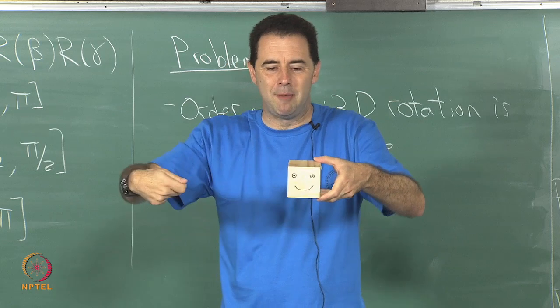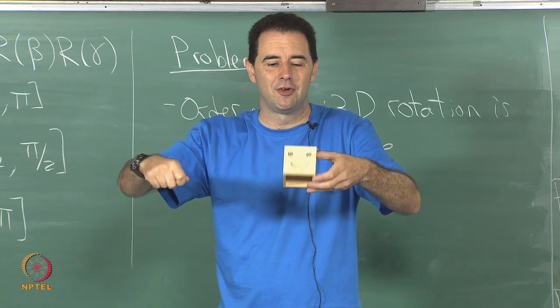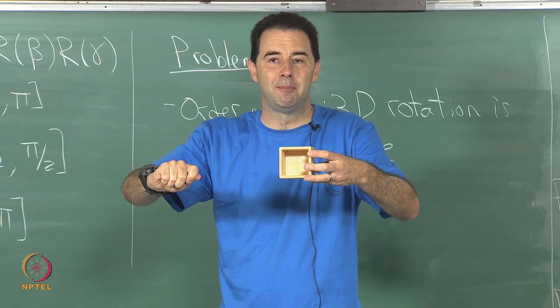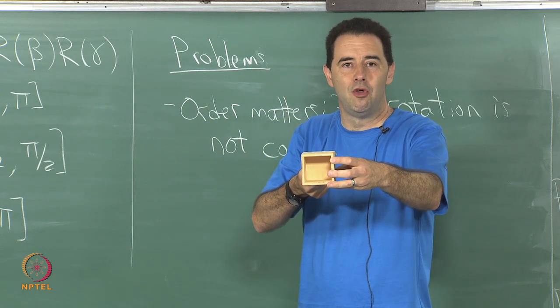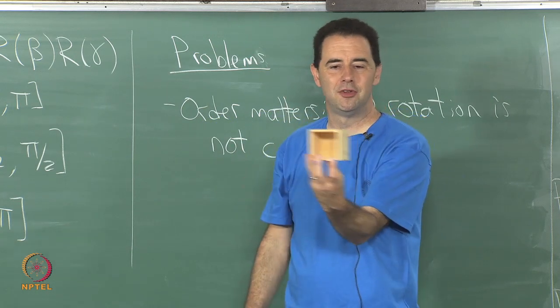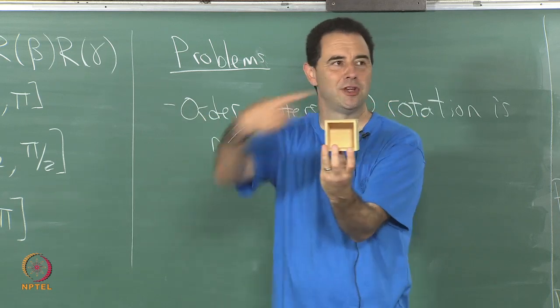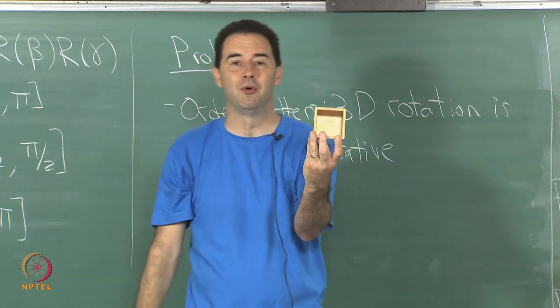Let us first do a pitch by 90 degrees. I pitch by 90 degrees, the face is looking up, and now I roll by 90 degrees, all right. In this case, see where the face is? It is looking to the side, the top of the head is towards the board, right.